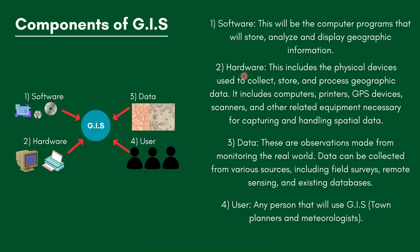Hardware includes the physical devices used to collect, store, and process geographic data. This comprises computers, printers, GPS devices, scanners, and other equipment necessary for capturing and handling spatial data. If they ask you for two components of hardware, the best two answers are computers and printers, as those are the main components.